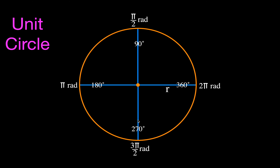Those cover the 0, 90, 180, and 270 degree positions. Now we do 45, 135, 225, and 315 degrees. For 45 degrees: 45 is one quarter of 180, so it's going to be one quarter of pi radians, which means 45 degrees equals pi over four radians.